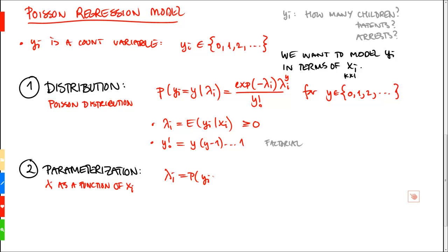So, we say that lambda i, which is the probability that yi takes on a value y given xi, that we want to specify as a function of xi. We call this function small letter h, to begin with.